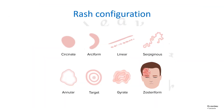Depending on the configuration, the rash can be circinate, archiform, linear, serpiginous (that is snake-like), annular, target-like a dartboard, gyrate, and zosteriform.